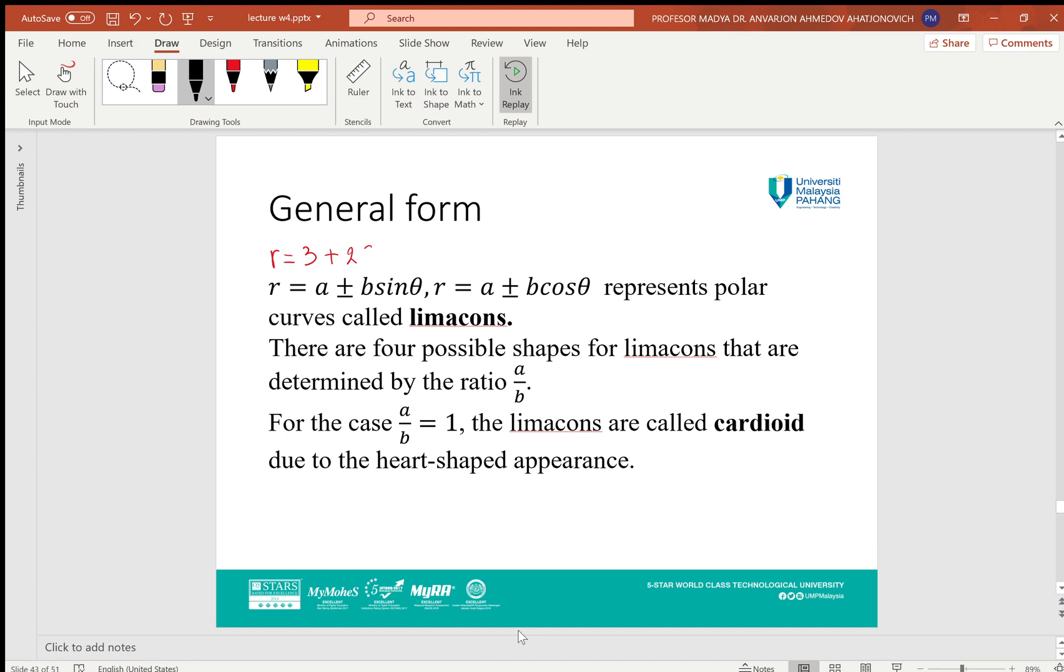There are four possible shapes for limacons that are determined by the ratio a/b. If a and b are the same, then it is called a cardioid because it will have a heart-shaped appearance.